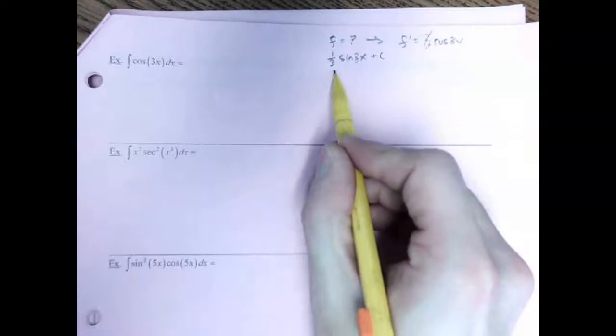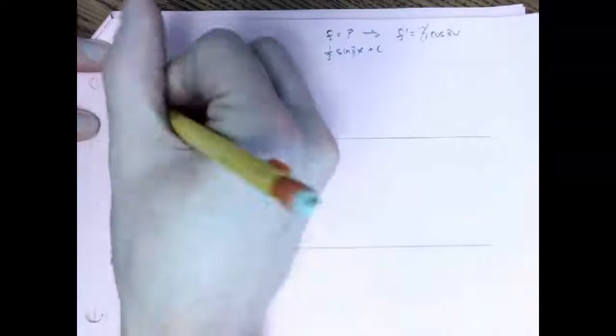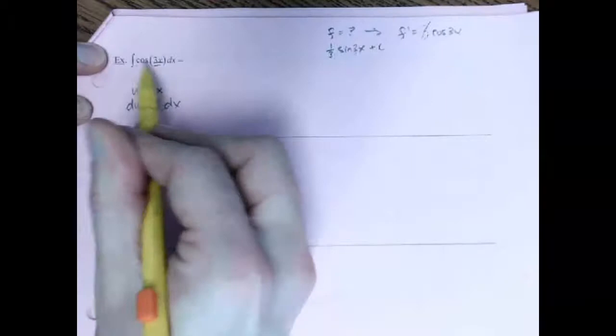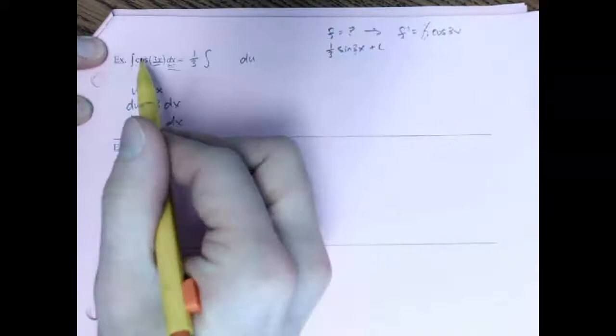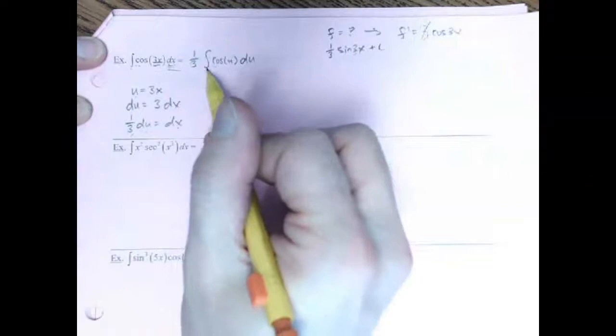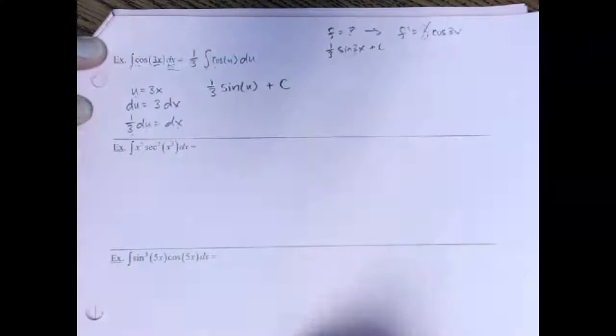How you actually do that with u-sub: the argument of the trig, the inside stuff, that's your u. Take the derivative, which would be 3, and then kick over the dx: 3dx. Now you don't have 3dx, you just have the 1dx. So that means 1/3 du would be equal to dx. Then substitute it all over. The integration symbol stays. The differential dx changes — you have the du, but you also have this extra 1/3, which I'm going to put out in the front. And then cosine of 3x switches to cosine of u. Integrate: the 1/3 coefficient just copies, and the integration of cosine is sine plus c. Then reverse substitute: 1/3 sine of 3x plus c.